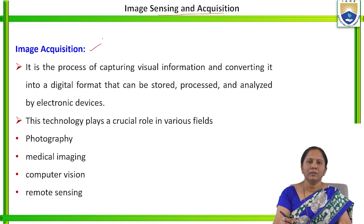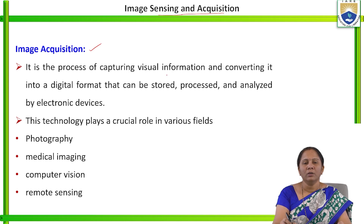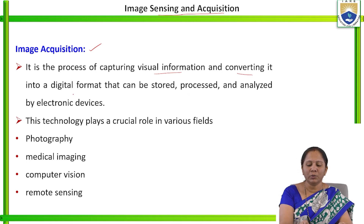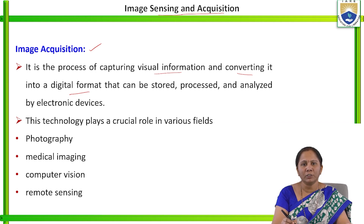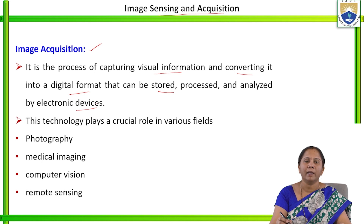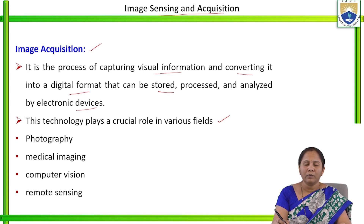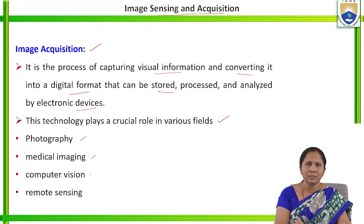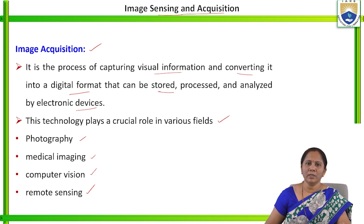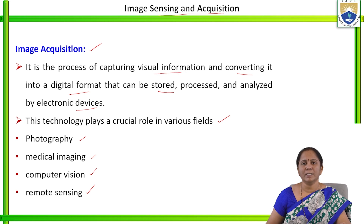What is meant by Image Acquisition? It is the process of capturing visual information. Once captured, it will be converted into digital format. After converting the image into digital format, that processed image can be stored and analyzed by electronic devices. This technology has applications in various fields like photography, medical imaging, computer vision, and remote sensing — in all these areas, image acquisition plays a major role.